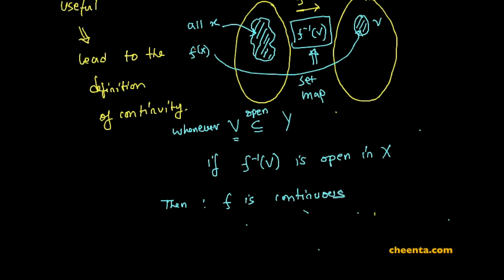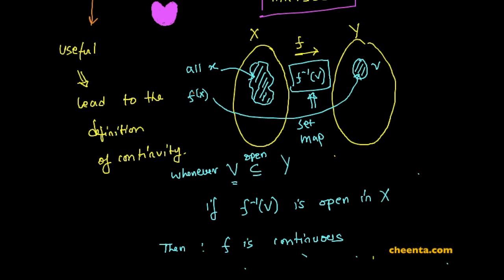This is the definition of continuity and essentially what we are saying is a function f is continuous if inverse images of open sets are open.